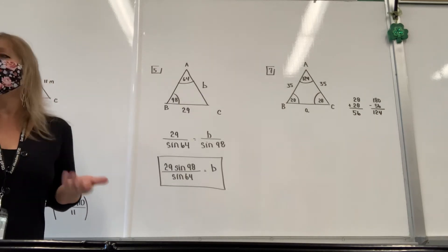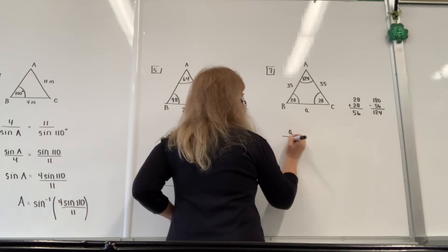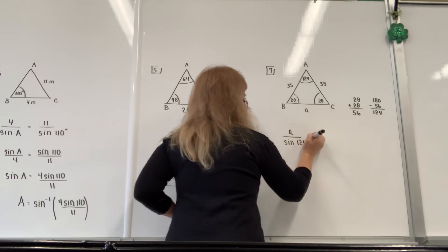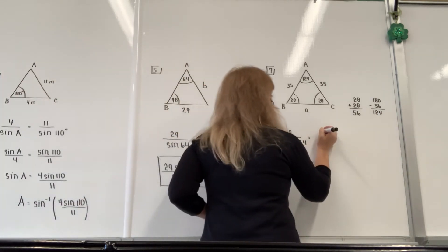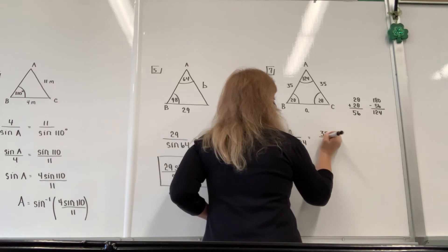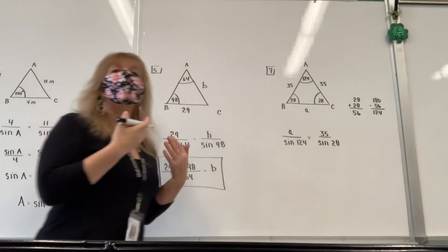So pick a side. I'm going to go with lowercase a. Because that's the one I'm looking for. Pick a side, divide by the sine of the opposite angle. And then pick a different side. And you can pick whichever one you want. So I'm just going to say 35. It doesn't matter which side I'm looking at. And divide by the sine of the opposite angle.